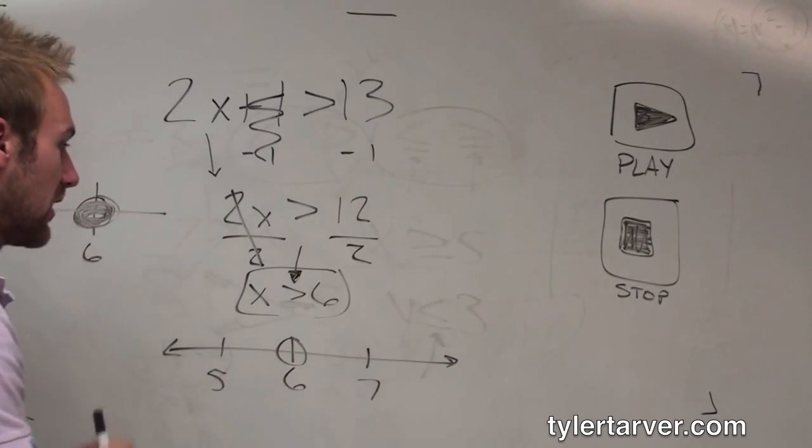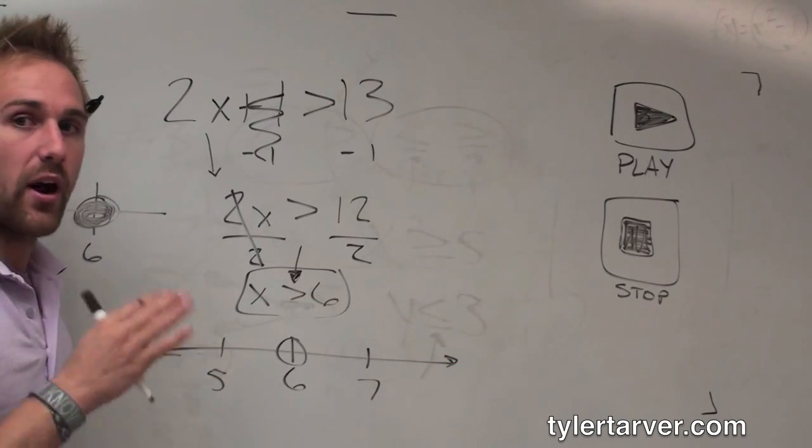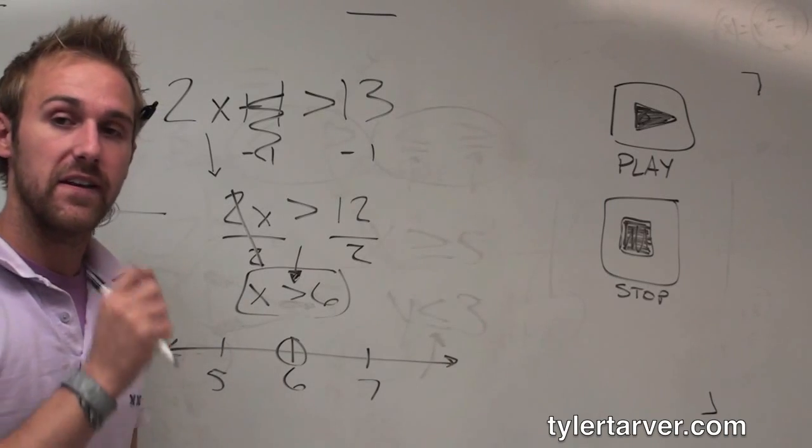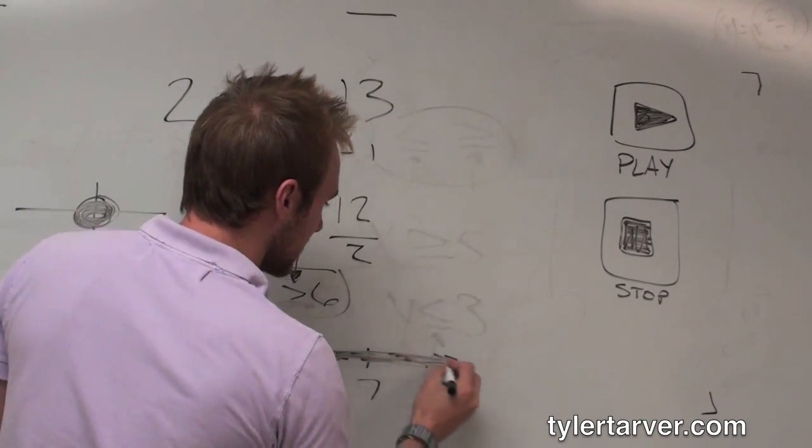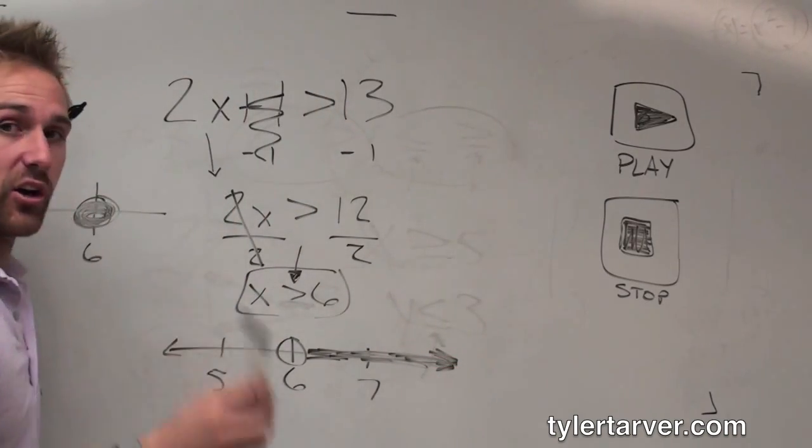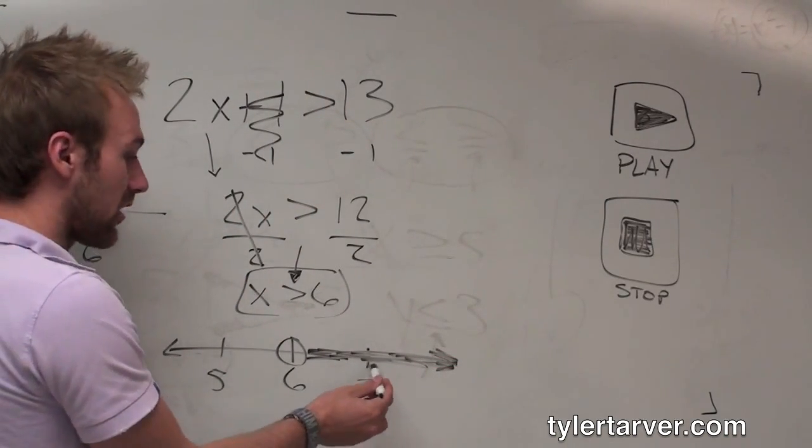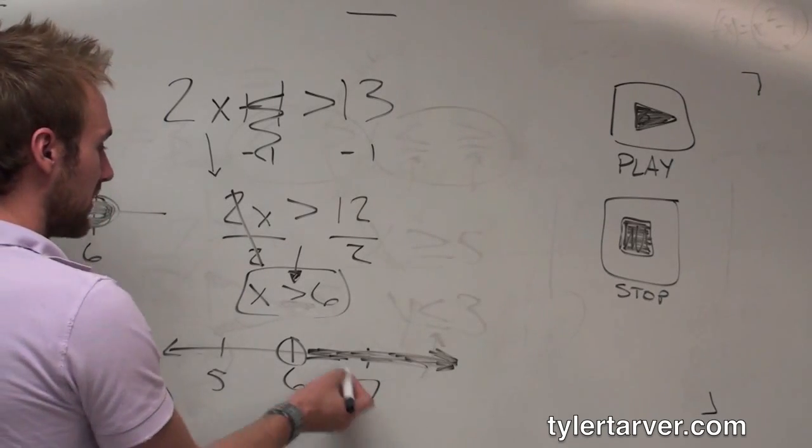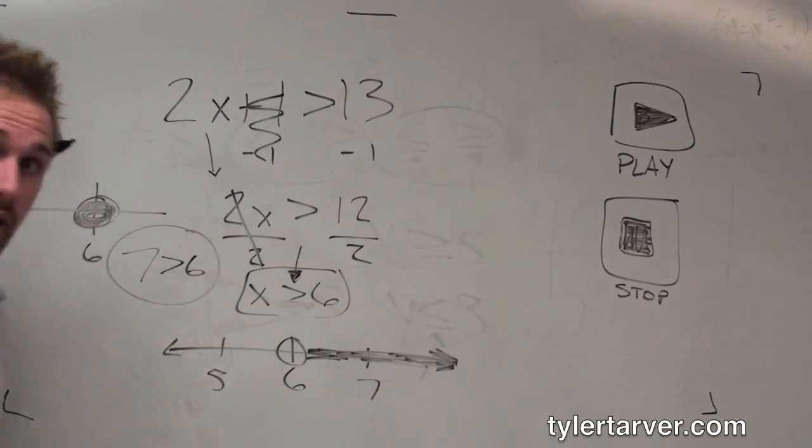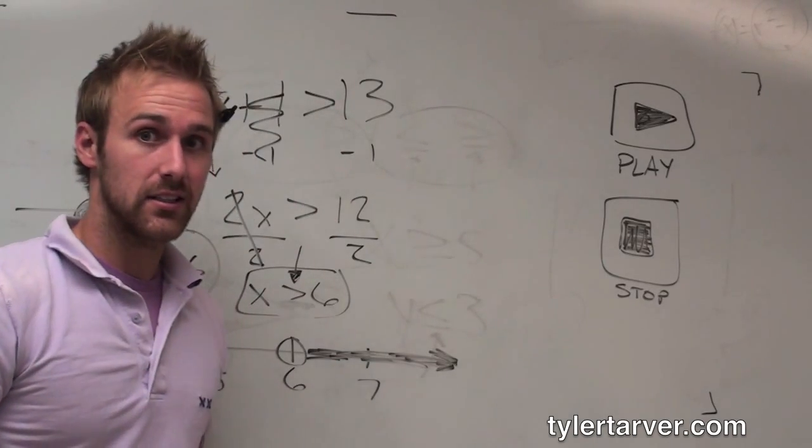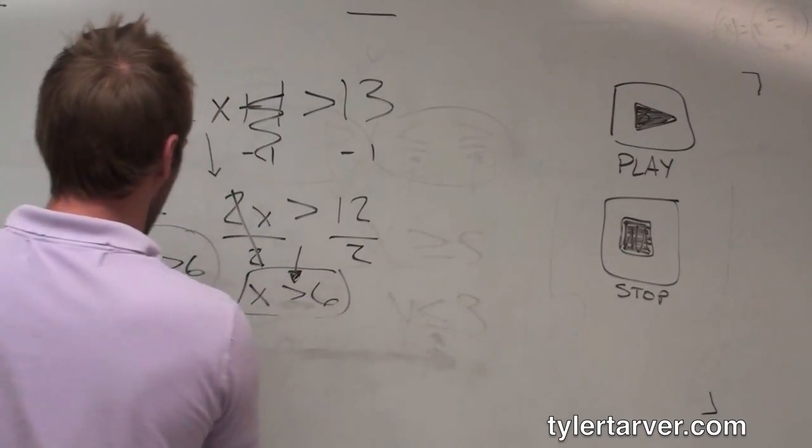Now we've got to figure out which side to shade. Do we shade to the right or to the left? x is greater than 6. Therefore, x can be any number that is bigger than 6, so I'm going to shade everything bigger than 6. A good way to check it, pick that number right there and plug it in for x. It should work because we shade it that way. Plug 7 in there. Is 7 greater than 6? All day. So that was one of the regular ones.